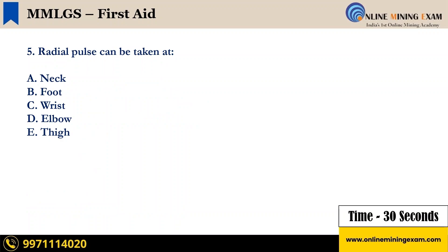Next question: radial pulse can be taken at — A — neck; B — foot; C — wrist; D — elbow; E — thigh. Your time starts now.